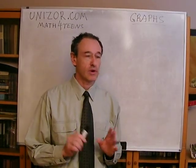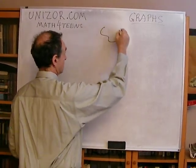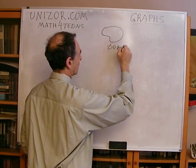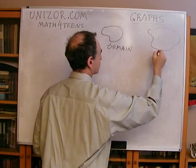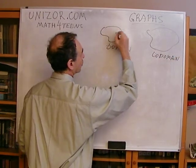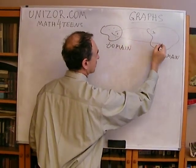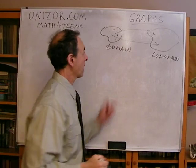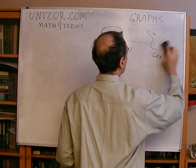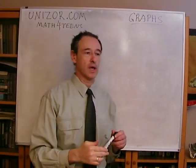First of all, let's very briefly remind what a function actually is. If you remember, the definition of a function includes a set called the domain, another set called the codomain, and a certain rule which puts into correspondence every element of the domain to a corresponding element — a value of the codomain. When we talk about graphs, we are talking about one particular kind of functions: functions where both domain and codomain are real numbers.